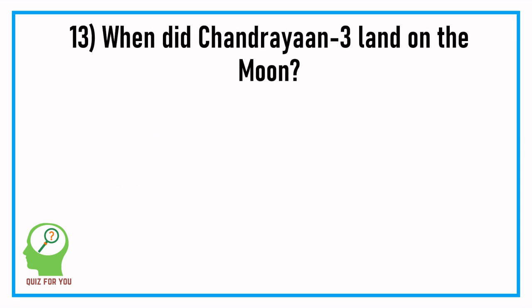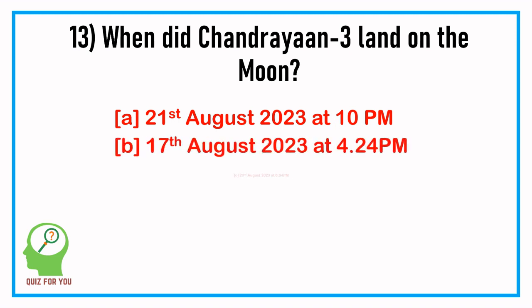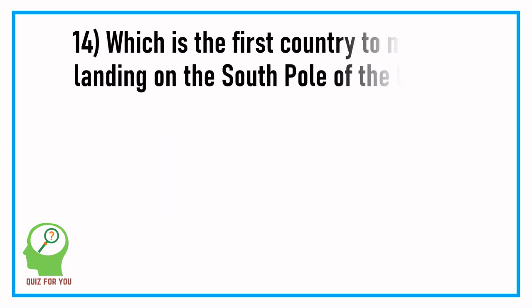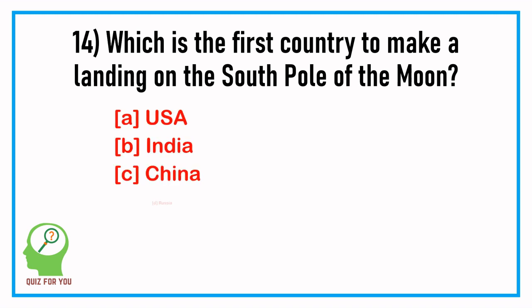Question number thirteen: when did Chandrayaan-3 land on the moon? Question number fourteen: which is the first country to make a landing on the south pole of the moon? Answer: India.